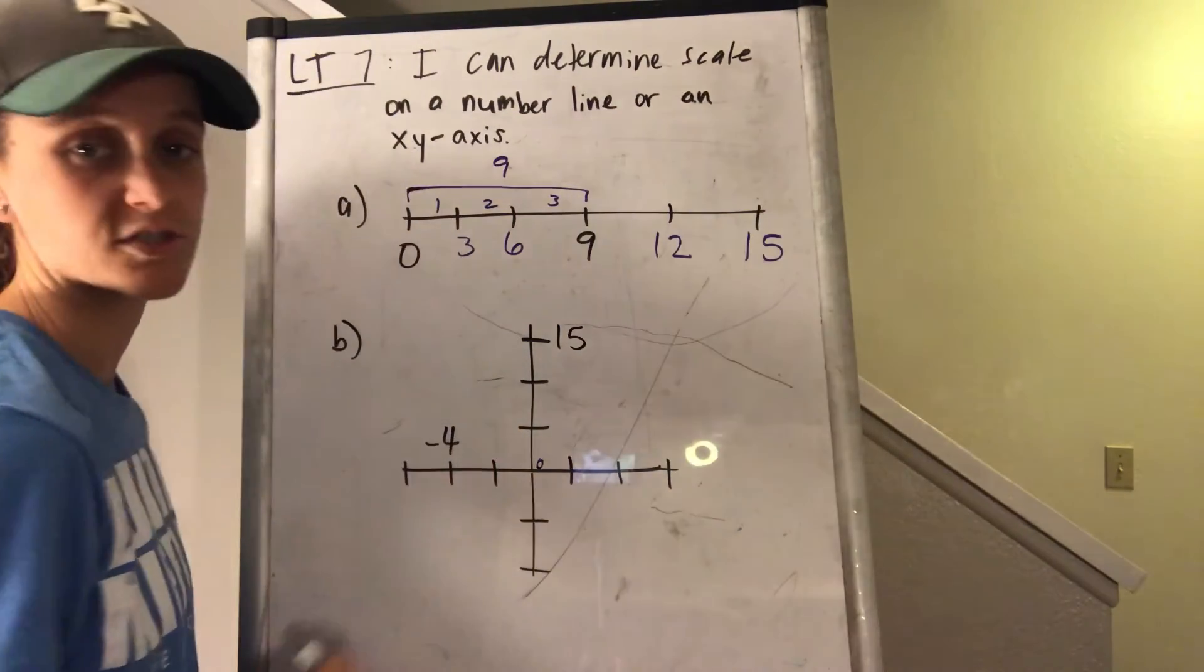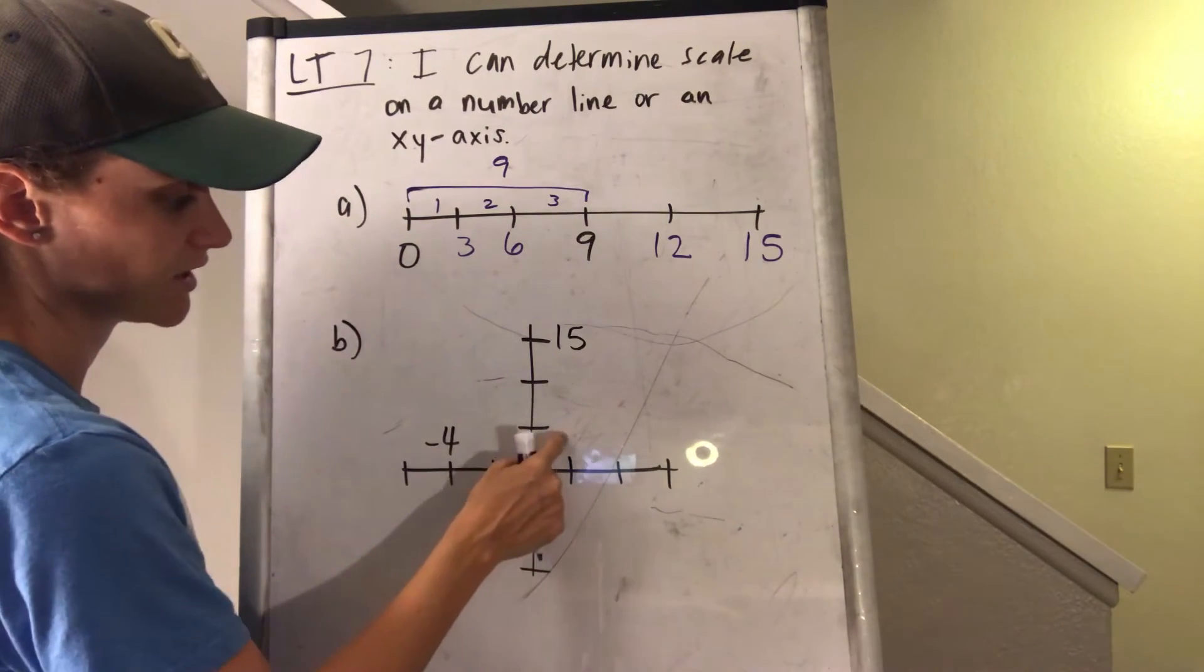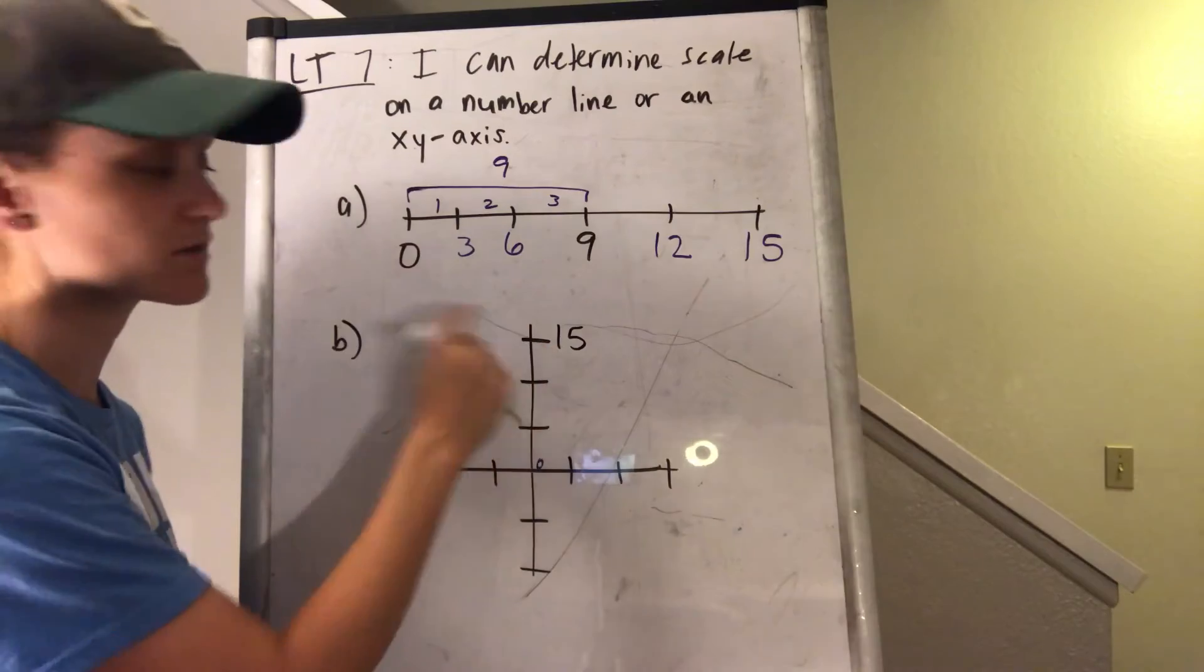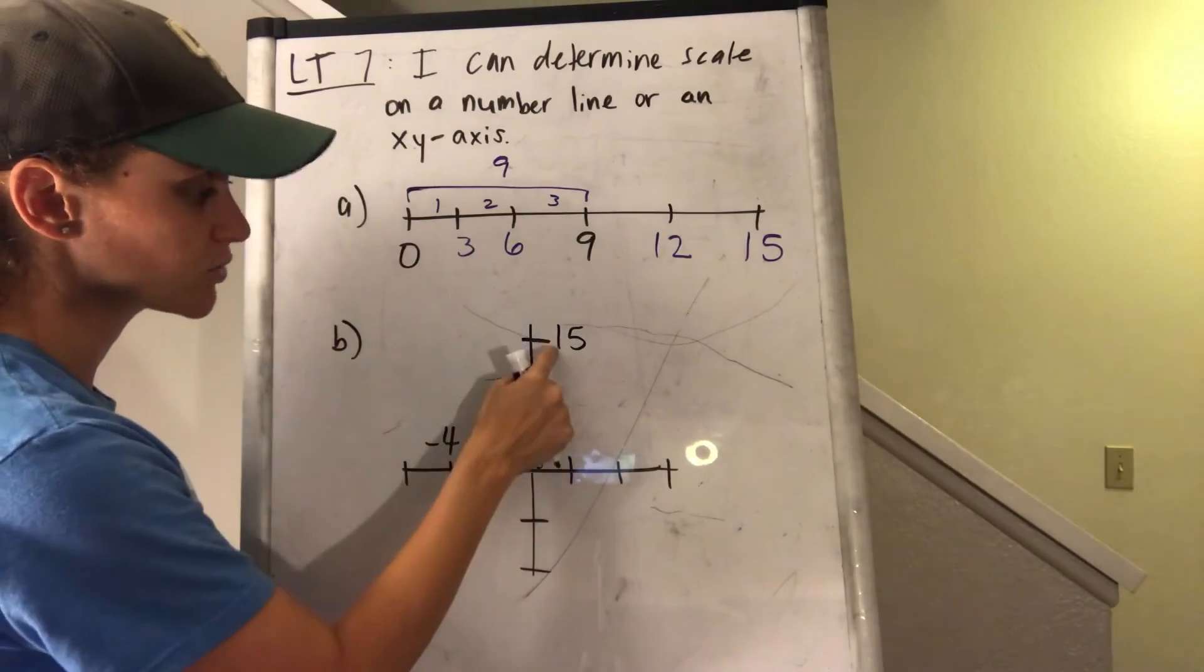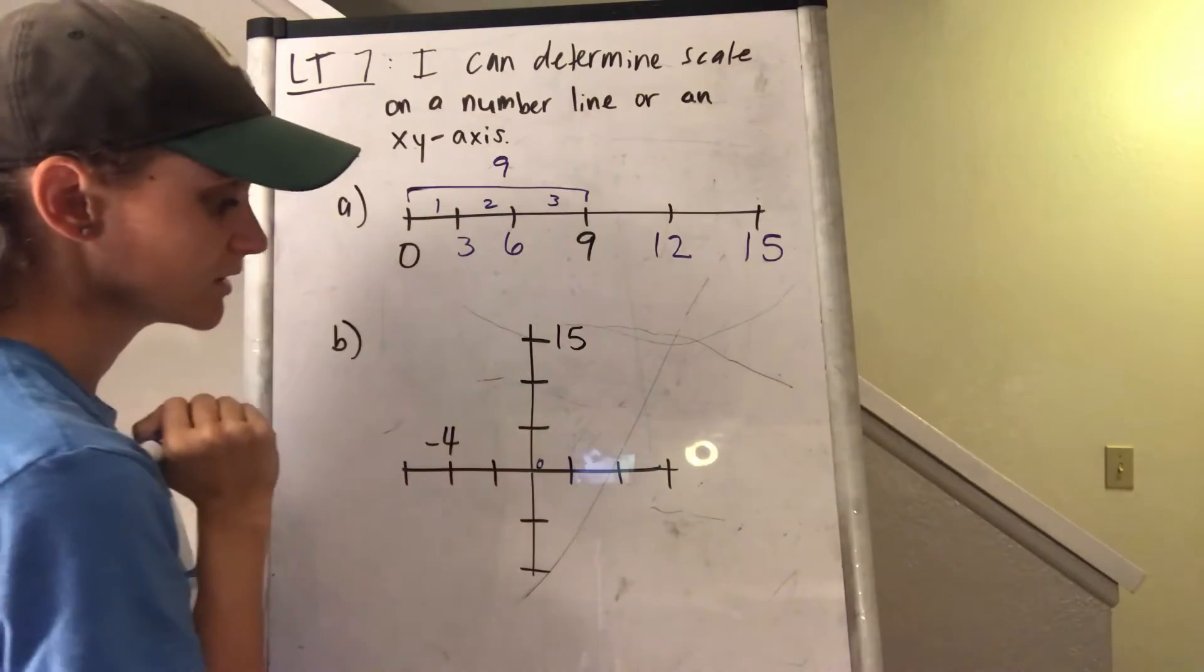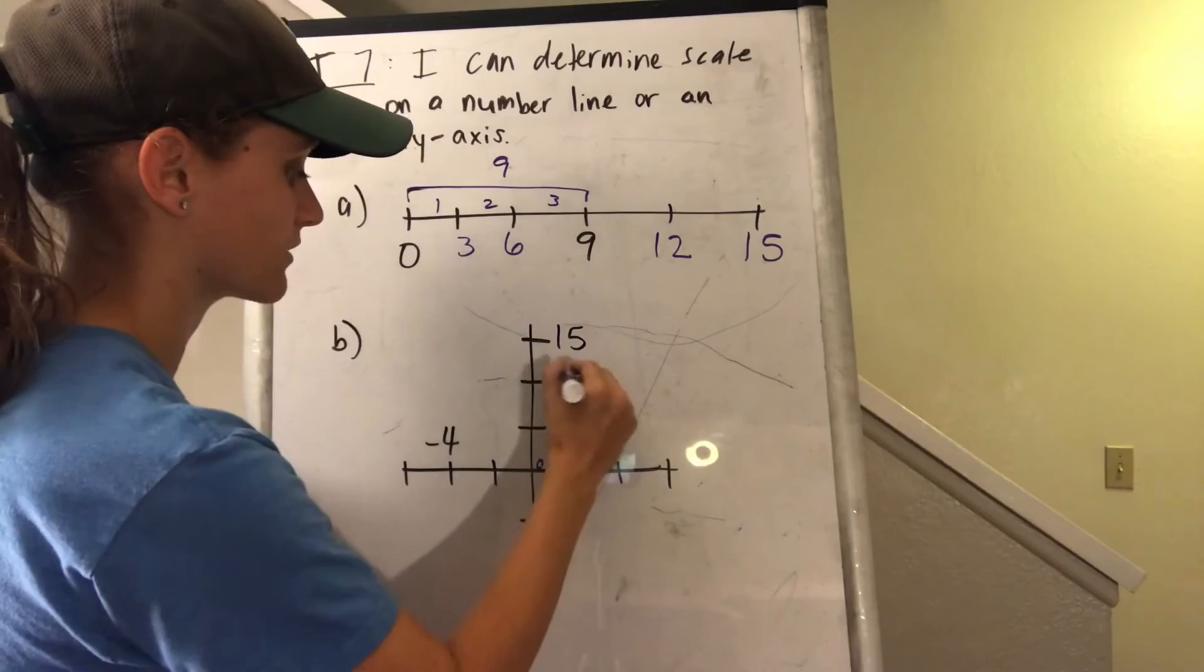So I could do guess and check again. So maybe I'll try 10. 0, 10, 20, 30. That didn't work. Maybe 4. 4, 8, 12. That was too small. Maybe 5. 5, 10, 15. Okay, so that worked.